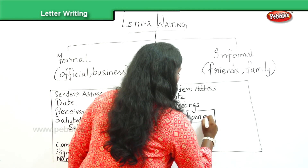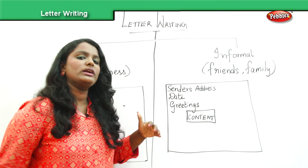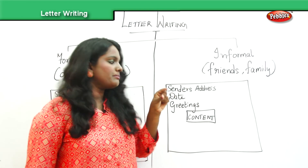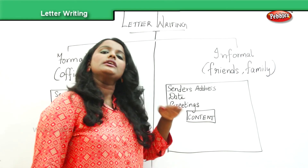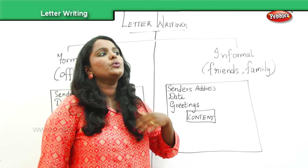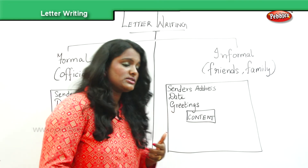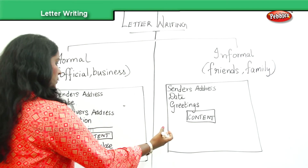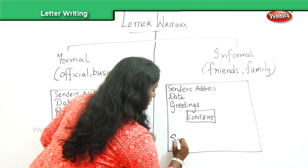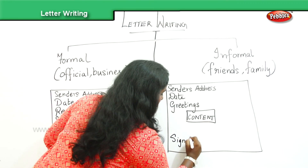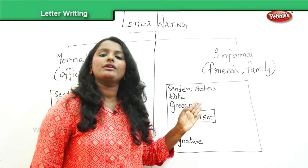Don't write the content as one long paragraph — make it small, simple paragraphs, two to three paragraphs. In the final paragraph, conclude by expressing that you are expecting a reply or asking the person to convey regards to someone. 'Thanking you' is not required in an informal letter since they are your friends and family. You simply end with your signature. This is the exact format for an informal letter.